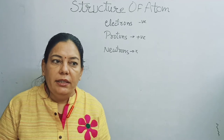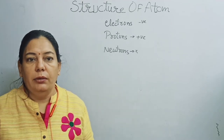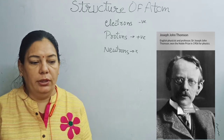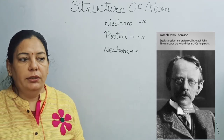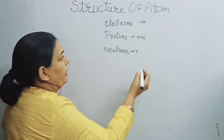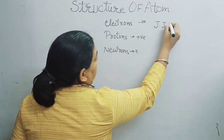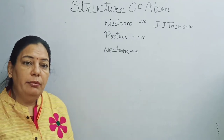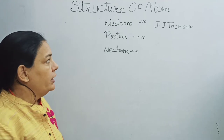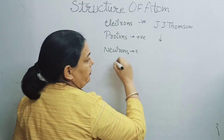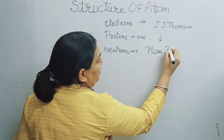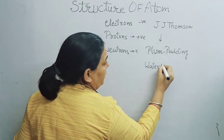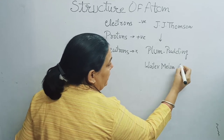All the scientists related to chemistry and physics started working on that. In this series, the first success was achieved by the scientist J.J. Thomson, a British scientist. He looked into atomic structure and made a model known as J.J. Thomson's model, also called the plum pudding model.